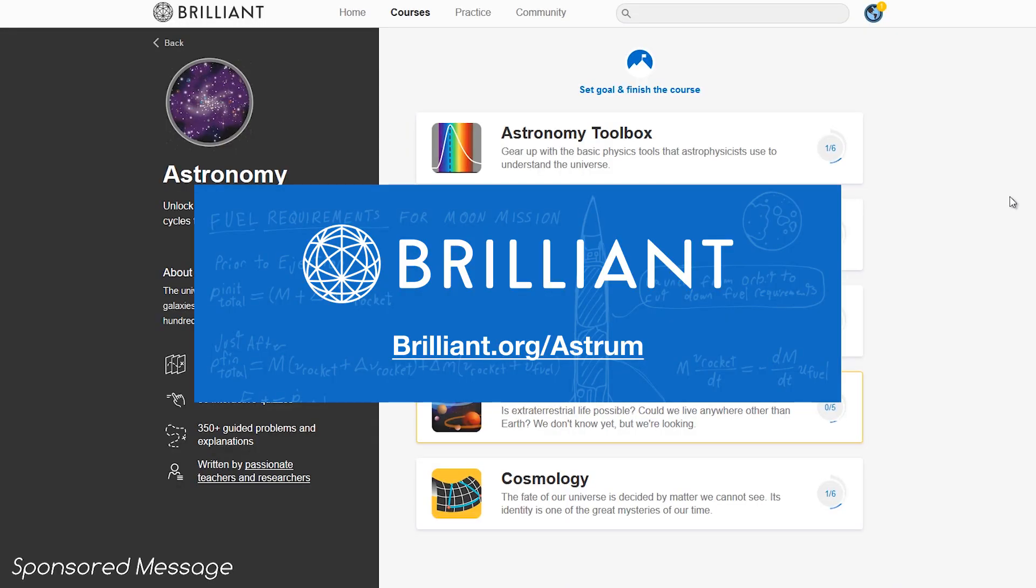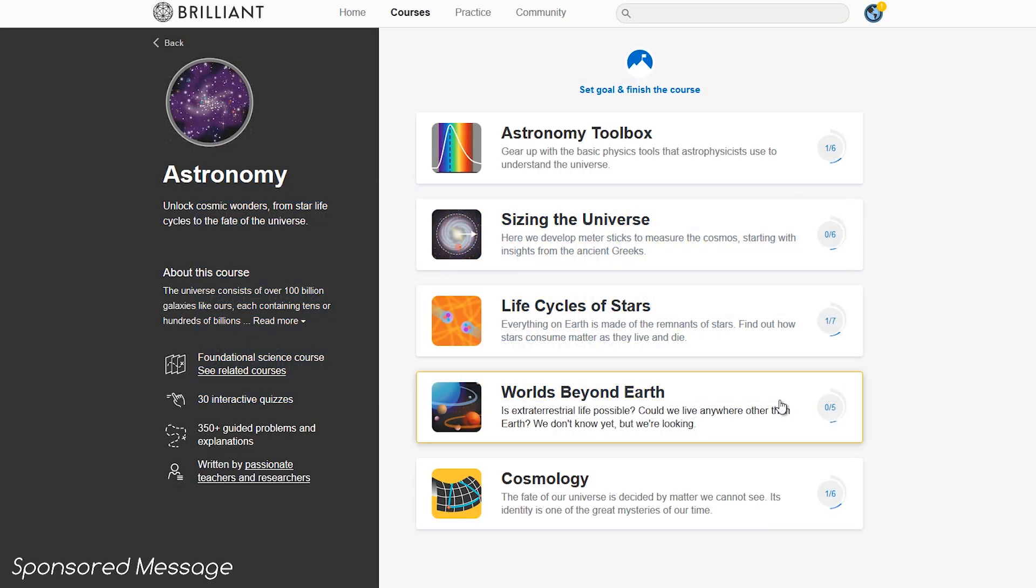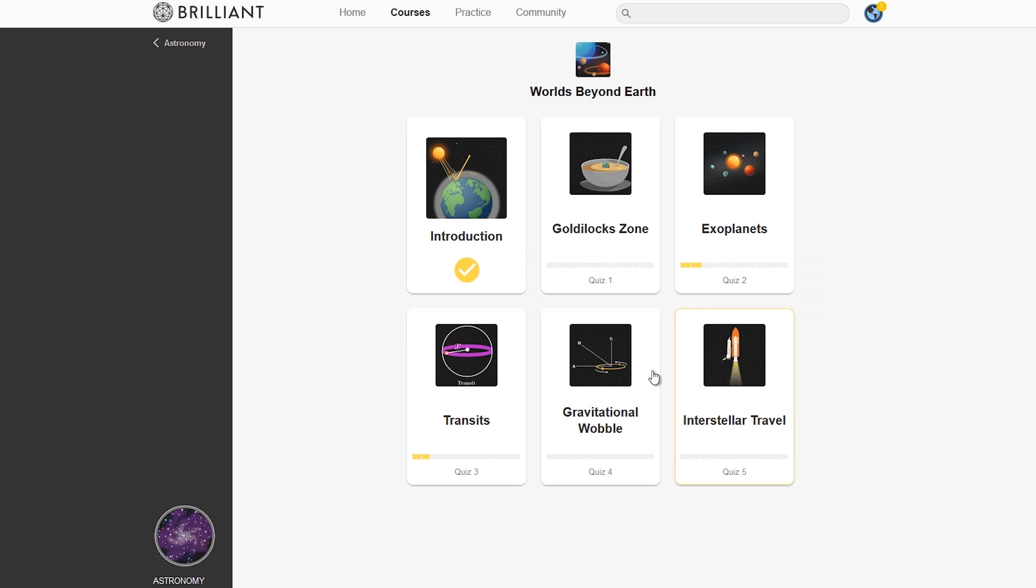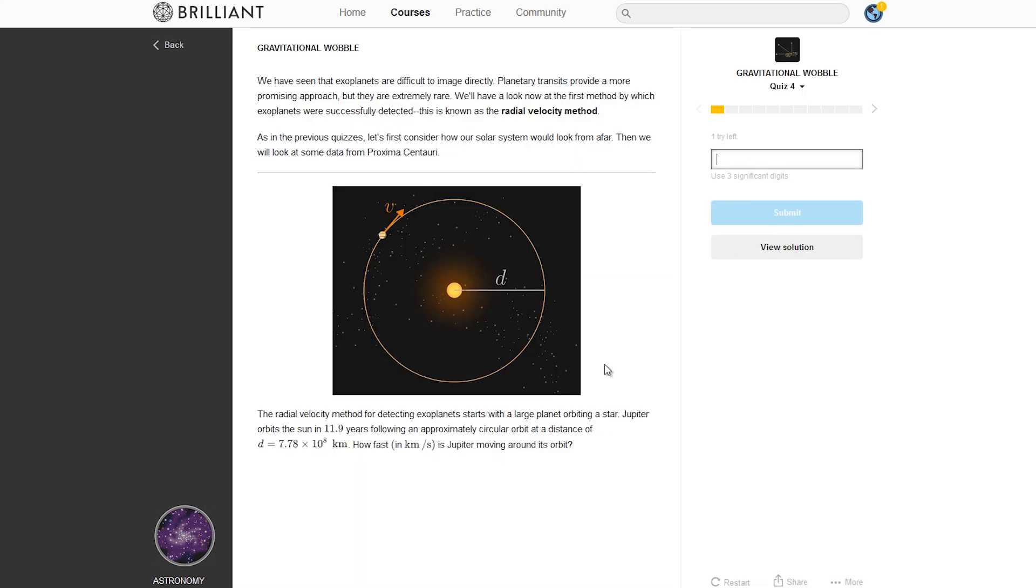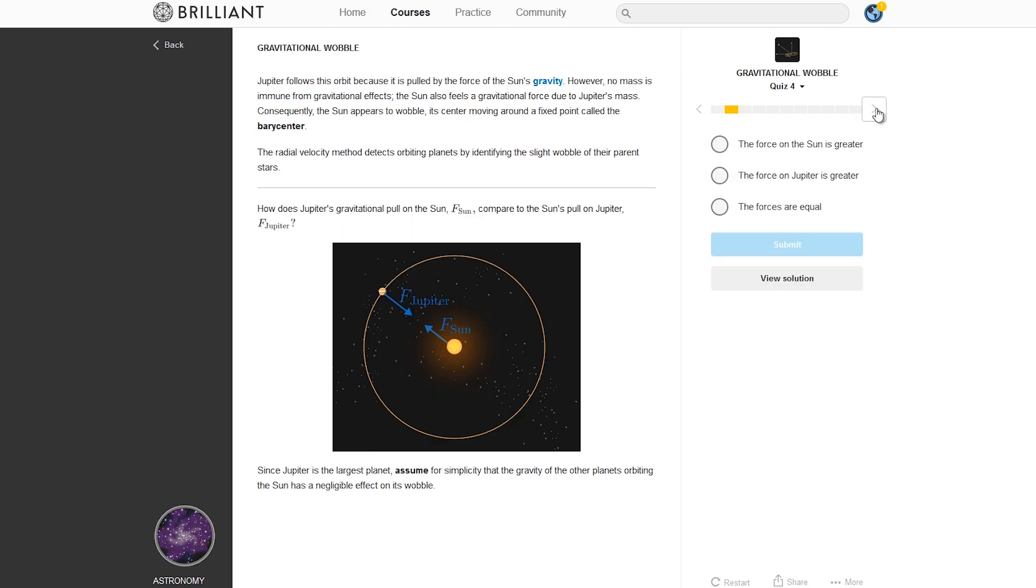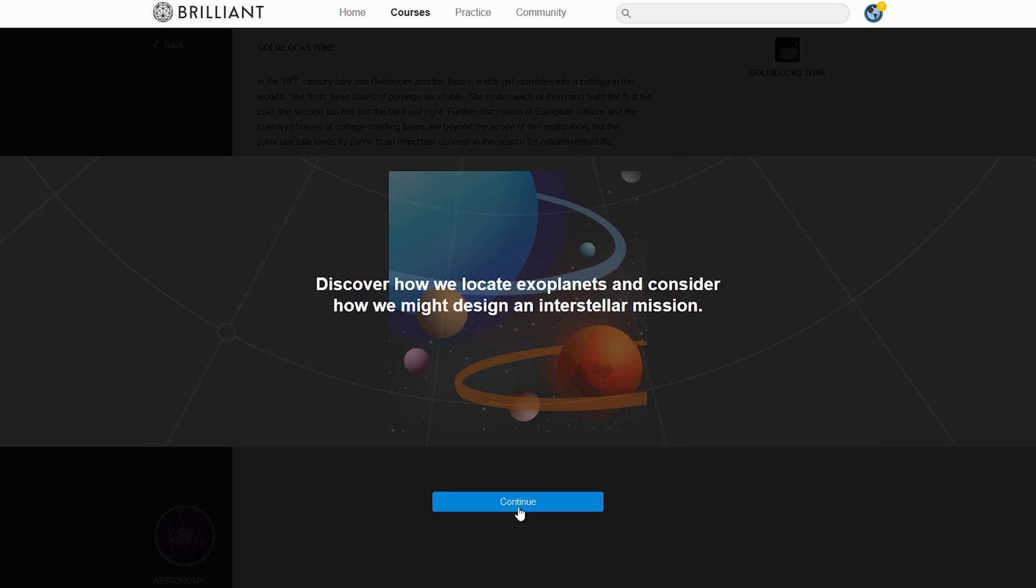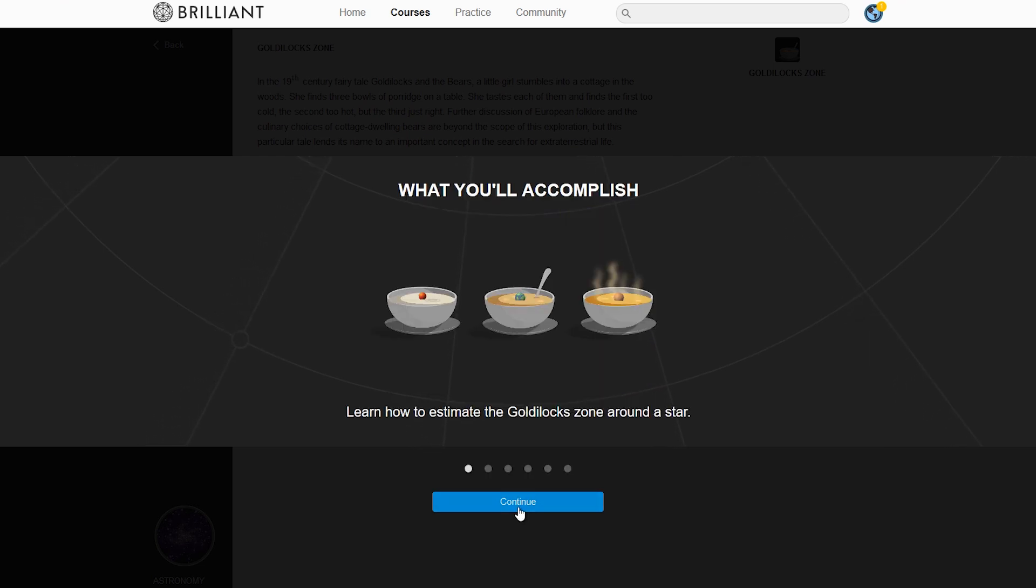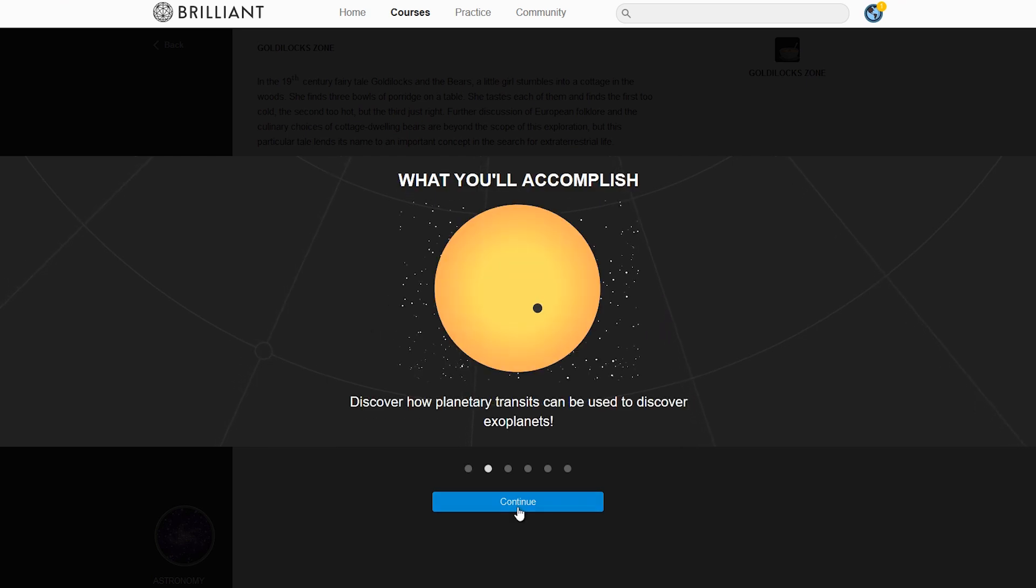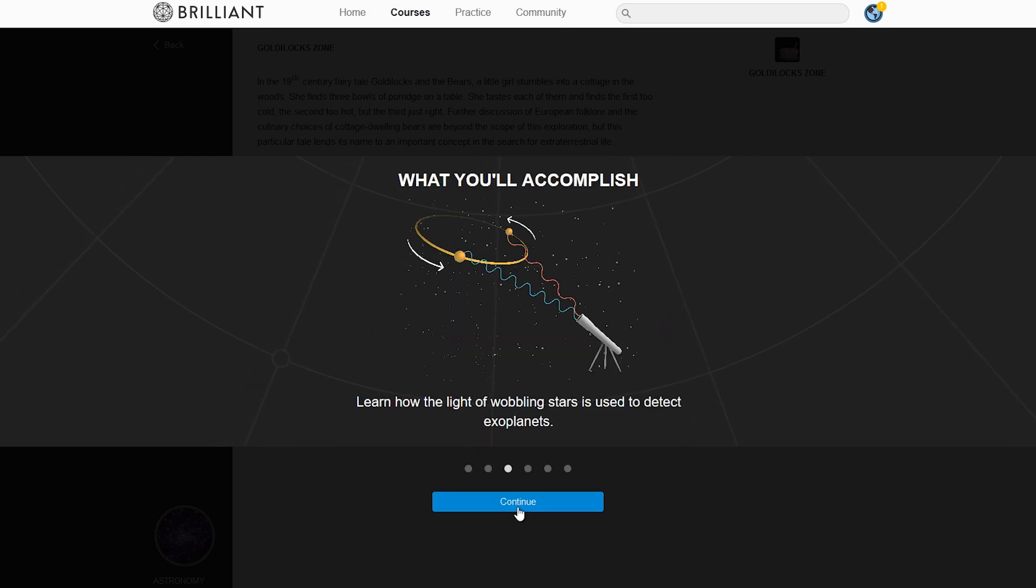Brilliant.org has a course specifically about worlds beyond our own, including a section on the radial velocity method, or gravitational wobble, the first known method for detecting exoplanets. Their course explains in detail how this is possible, and teaches you how scientists have been doing it for decades. The great thing about Brilliant is that it can take you through the mechanics of astronomy at your own pace so you can truly understand what it is I'm talking about. That's why it's a perfect match for my channel. Did you want to know more about the topics I've talked about today? Then give Brilliant a go!